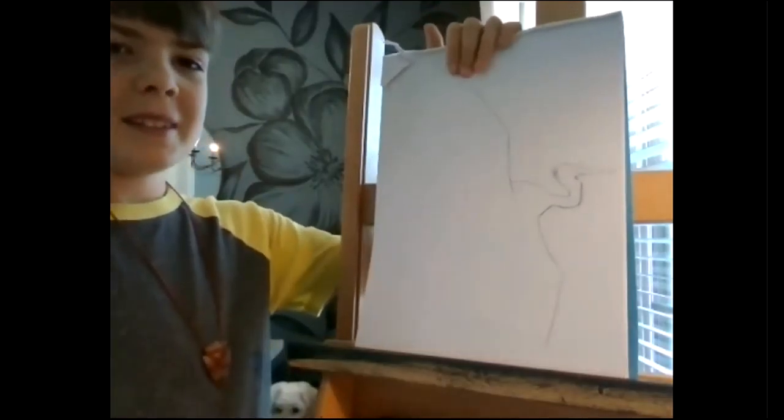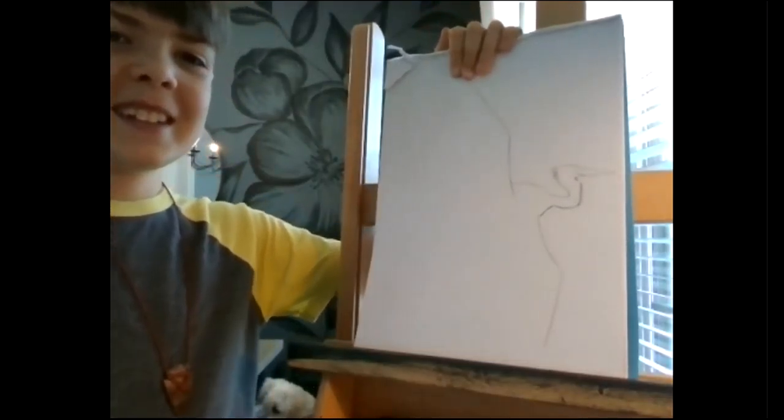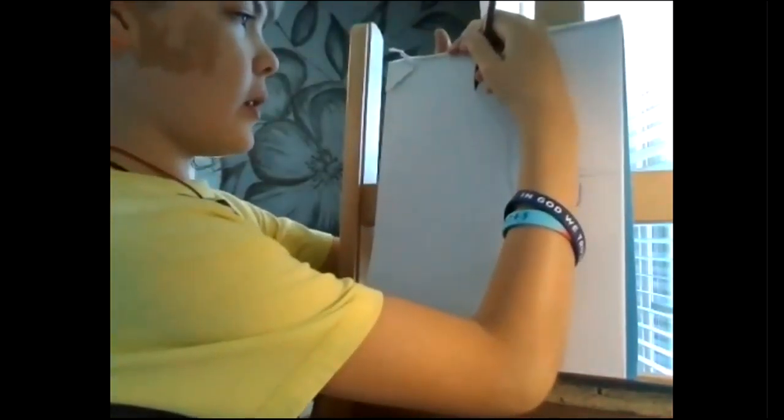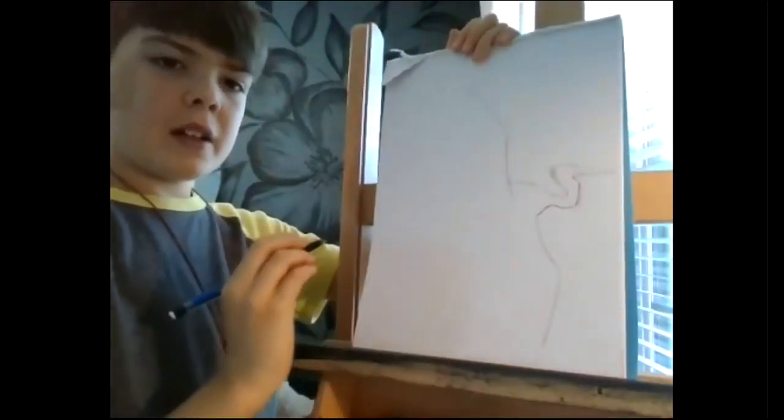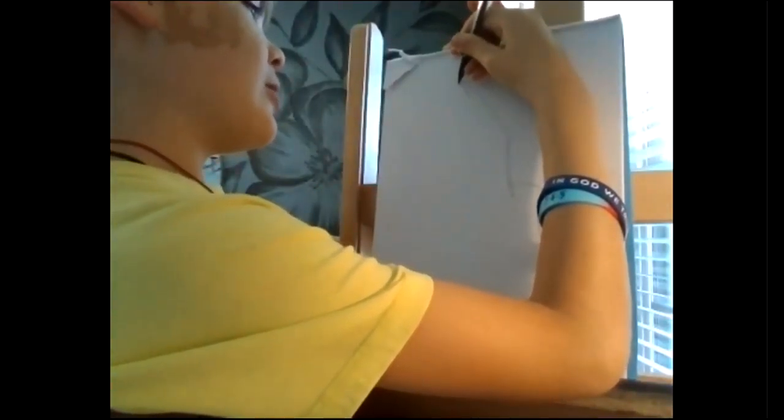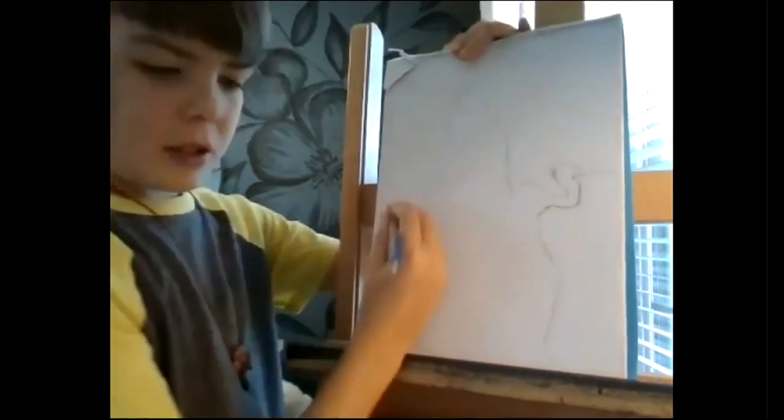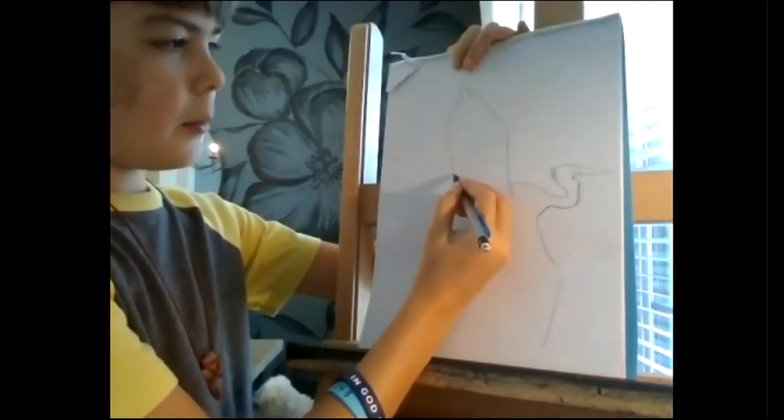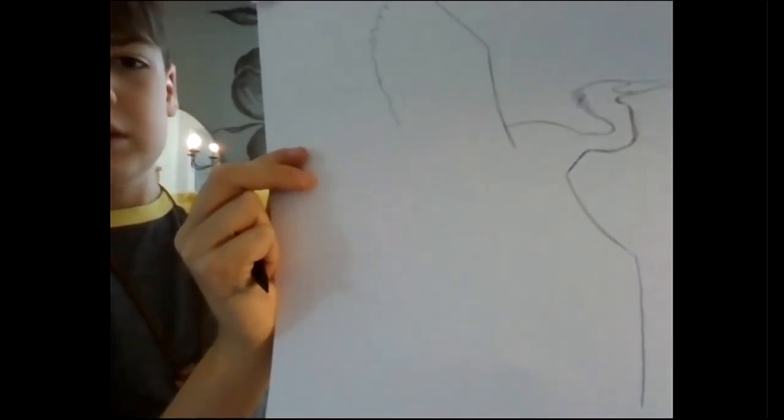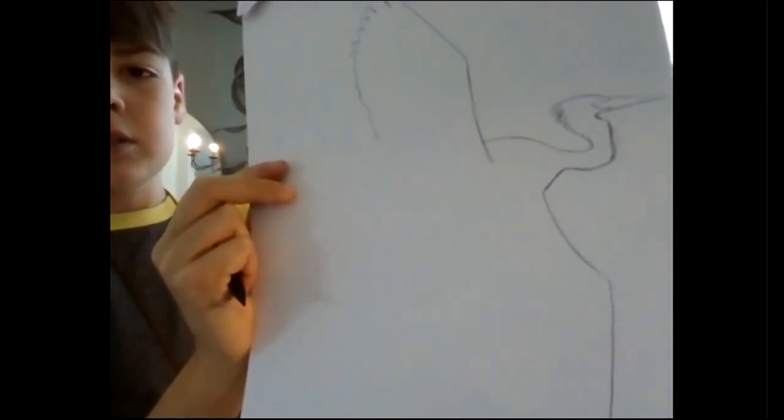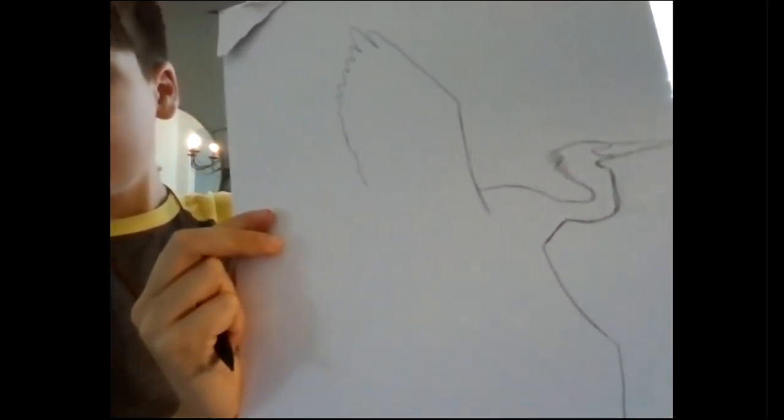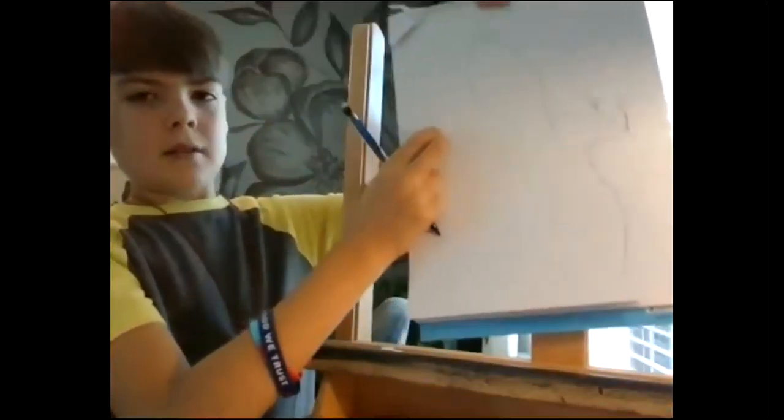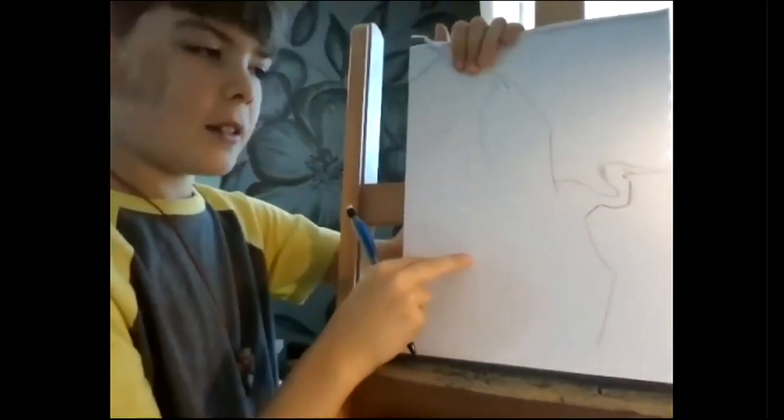Now we're going to do the feathers. We're going to start with one feather like this, and then after we do that feather, the next feather is going to be a little bit taller. And then we're going to make them get smaller and smaller. We're just doing little bumps and we're going to come down to about right there.